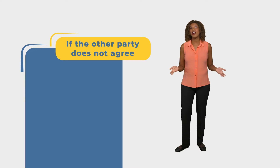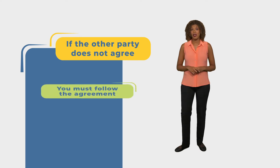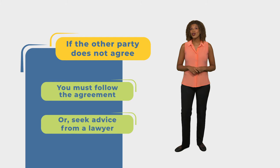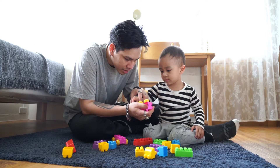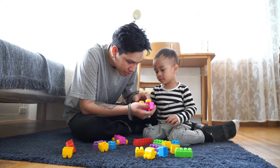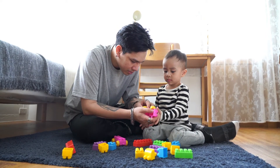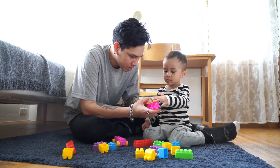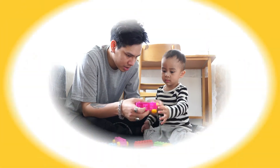If the other party does not agree to the changes you want to make, then you must follow the agreement as it is written, or seek advice from a lawyer about your options. In certain cases, you can ask the court to modify the terms. This is most common in child custody cases where the agreement has been included as part of a court order. Consult with a lawyer to learn more.